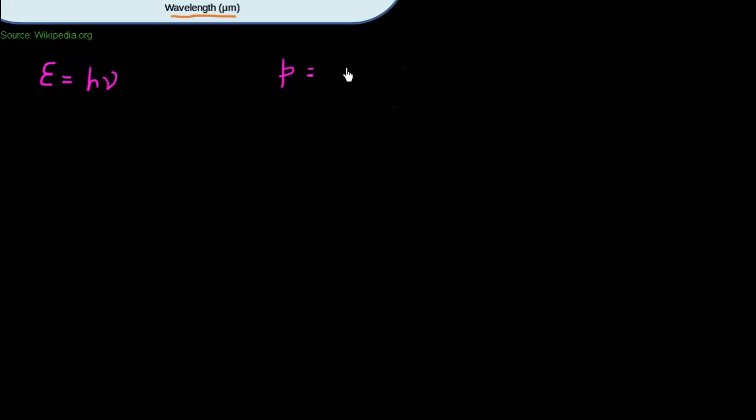The very first equation, thanks to Albert Einstein, is that the energy of a photon is related to the frequency of light by E = hν, where the energy is proportional to frequency and the proportionality factor is Planck's constant. The second equation is that the momentum of the photon is proportional to the wave vector, and I can also write the wave vector as a function of frequency.